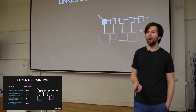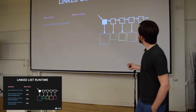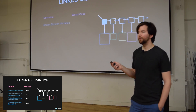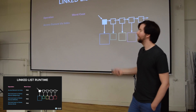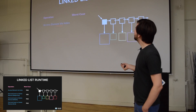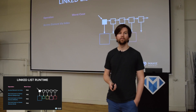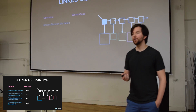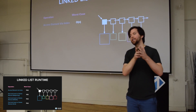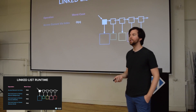Let's talk about the runtime complexity of operations on a linked list. If we know the index of an element and want to access it — for example the fifth node — what's the runtime complexity in big O notation? It will be O(N) because you need to basically access all the previous nodes in order to get to the element in question. You start at the head node and iterate through until you find the node you're looking for.